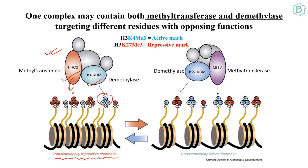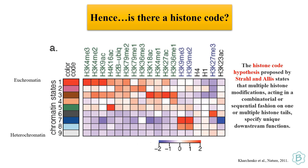In contrast, in a transcriptionally active complex, methyltransferase MLL2 transfers the active methyl mark to K4, and K27 demethylase removes the repressive mark from K27, making transcriptionally active chromatin. The histone code hypothesis, proposed by Strahl and Allis, states that multiple histone modifications act in a combinatorial and sequential fashion to specify unique downstream functions. Chromatin states are shown with red indicating more euchromatin-like structure and blue indicating more heterochromatin-like structure.